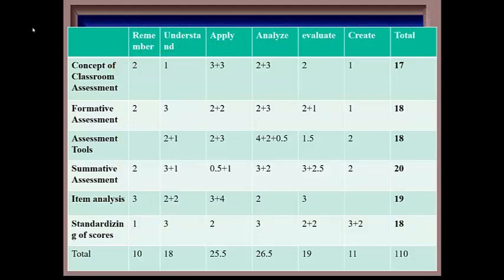The table of specifications shows marks for different questions. For instance, in column 3 under the applying, we have 3 plus 3. This indicates there are two questions carrying three marks each. Are you getting what I am saying? This is a bit tedious, but I know you can do it. Similarly, two marks indicate that there is one question carrying two marks. This is a table of specification.